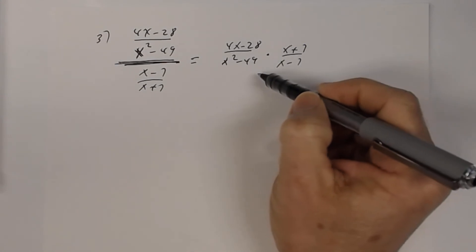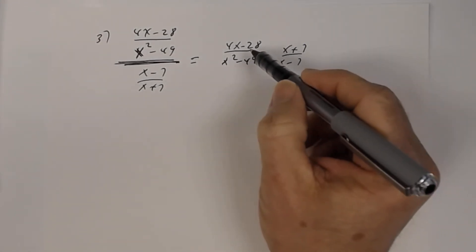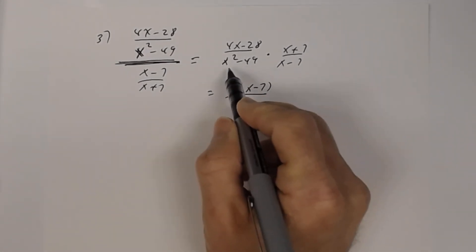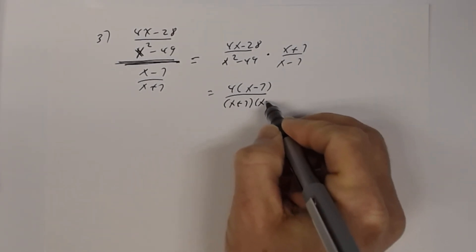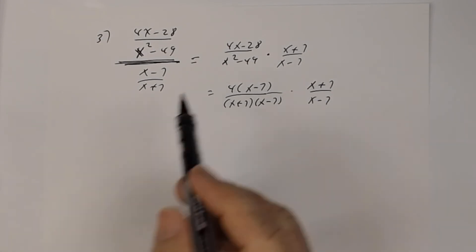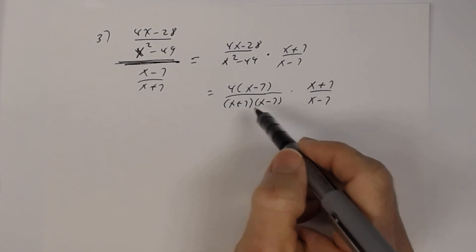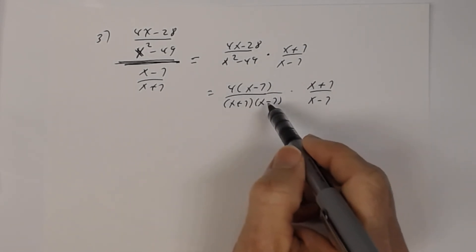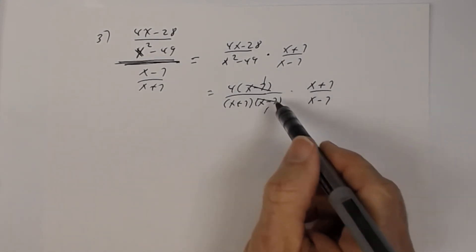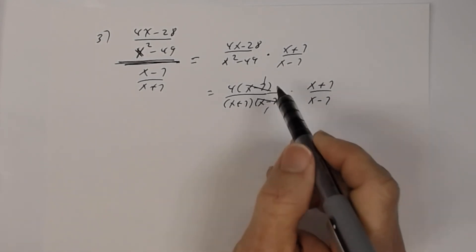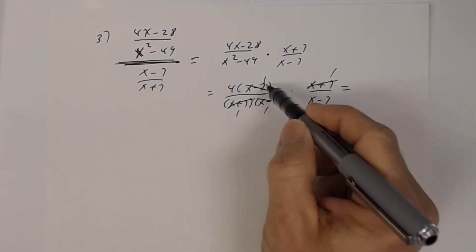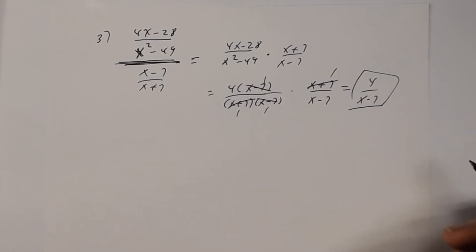Now use your knowledge from previous lessons: factor first. In the numerator, factor out four to get four times x minus seven. The denominator is a difference of two squares, so it factors as x plus seven times x minus seven — you must show that factoring. Then reduce: x minus seven appears in the numerator and denominator, and x plus seven appears in both as well. After reducing, the answer is four divided by x plus seven.